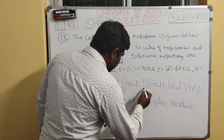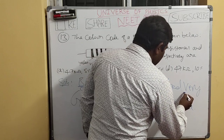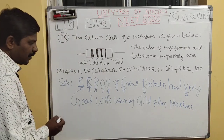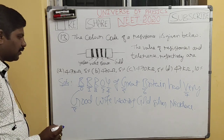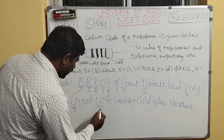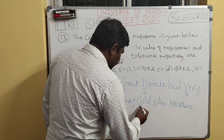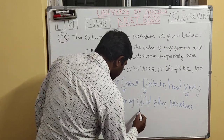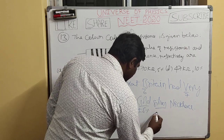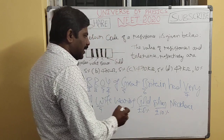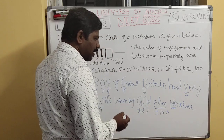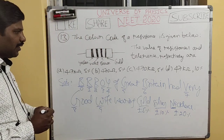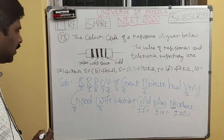Blue is 6, V indicates violet which is 7, G indicates gray which is 8, and W indicates white which is 9. Gold and silver at the end indicate tolerance values: gold is ±5%, silver is ±10%, and no color (N) is ±20%.